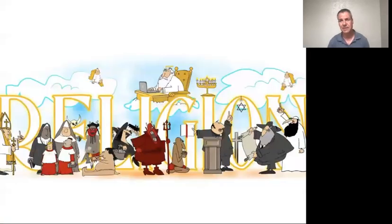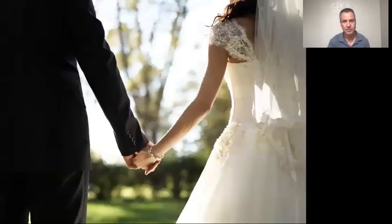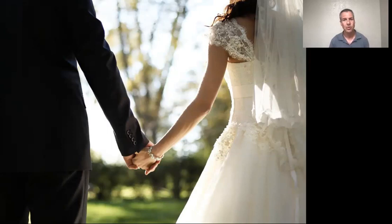We'll also examine some of the institutions that serve to bond humans together. We'll ask: is religion innate in all human cultures? Or has our belief in higher powers evolved and changed through time? And is there anything natural about what humans believe or about how we behave? How have the rules about whom and how we choose to love changed over time, for example?